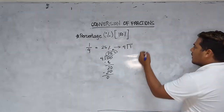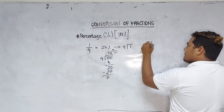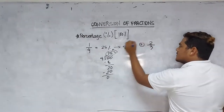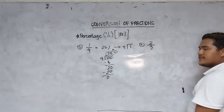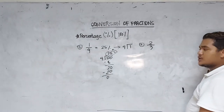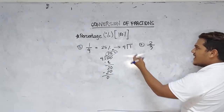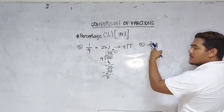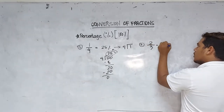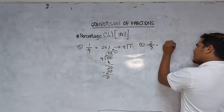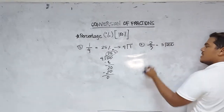Let's continue. How about two-thirds? Example number two. How do you convert two-thirds into its percentage form? First, you have to multiply the numerator by 100. So this will become 200. The dividend now will become 200 divided by 3.